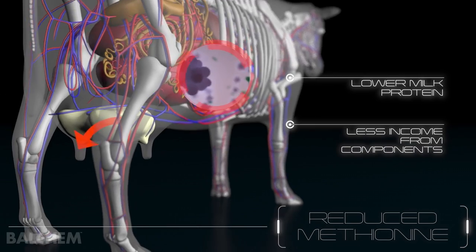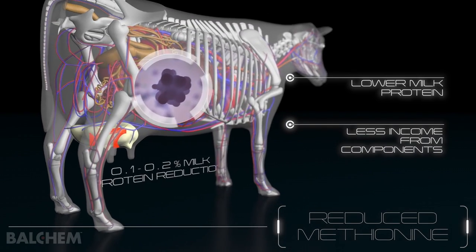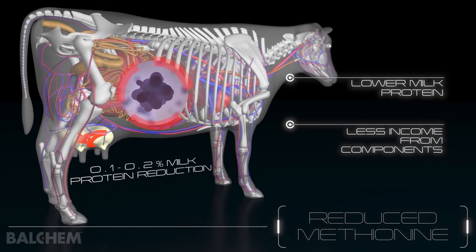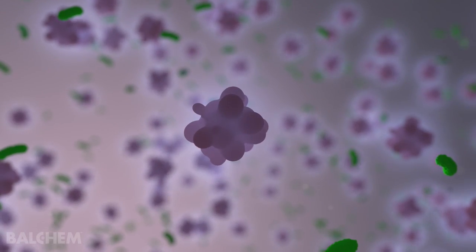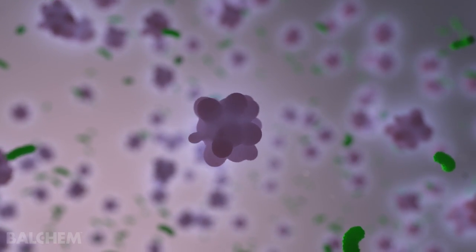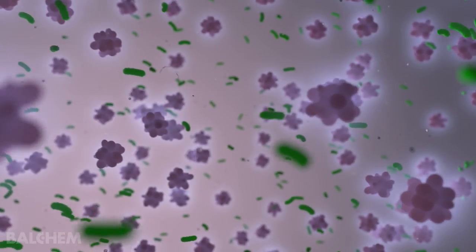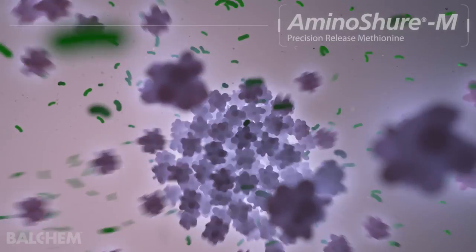Research shows that when methionine supply is deficient, the protein content in milk can drop as much as one to two tenths of a percent. To help overcome this deficiency, Balchem Corporation has created Aminosure M precision release methionine.